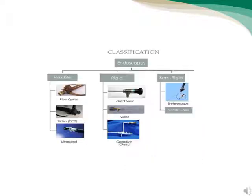We can divide endoscopes into flexible endoscopy, rigid endoscopy, and semi-rigid endoscopy. تصنف المناظر إلى ثلاثة أقسام: المناظر الصلبة والشبه الصلبة والمناظر المرنة.